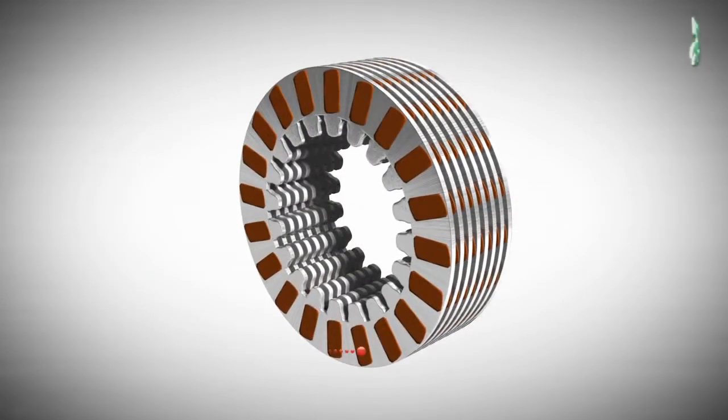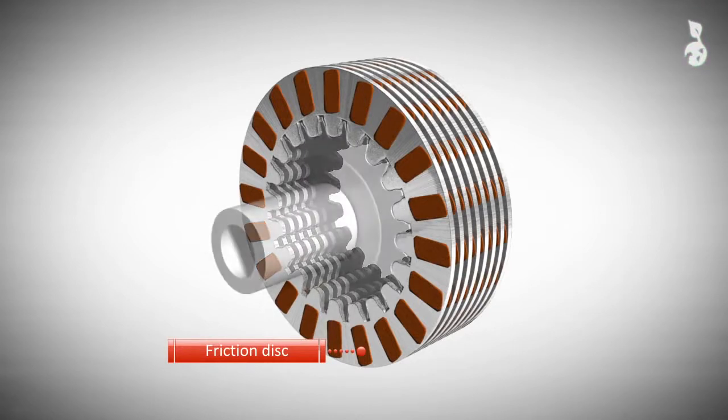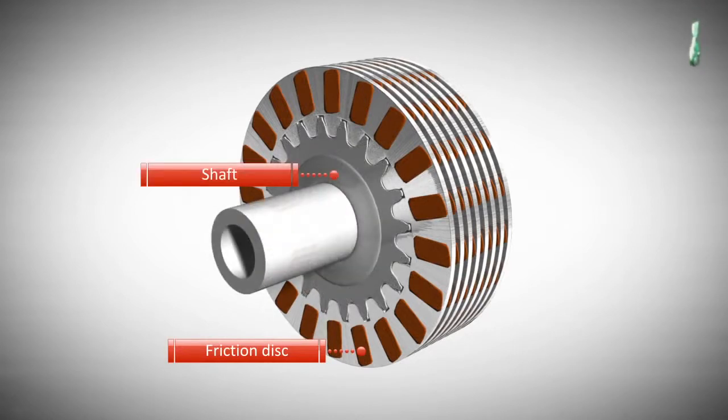A multi-plate clutch is composed of a series of friction disks that are connected to a shaft. The friction disks have friction surfaces to increase the coefficient of friction.